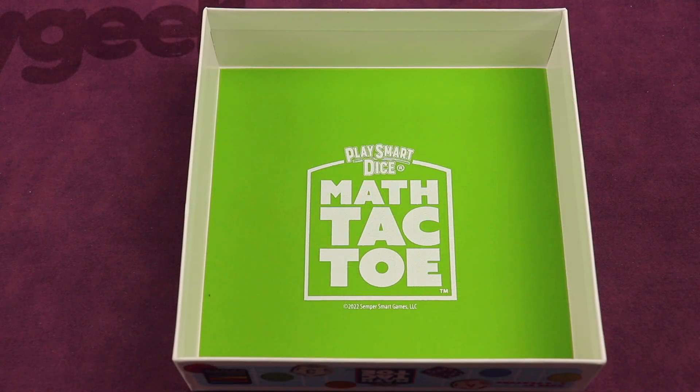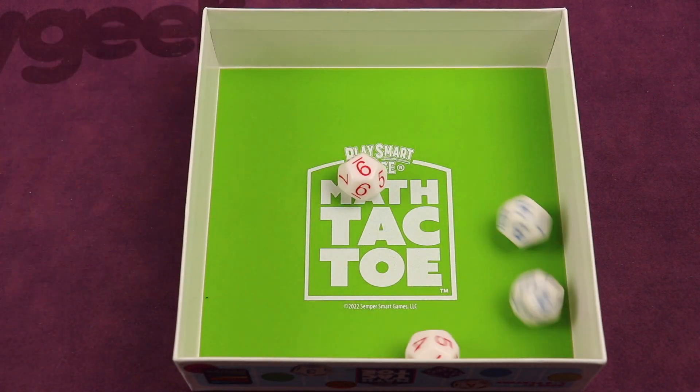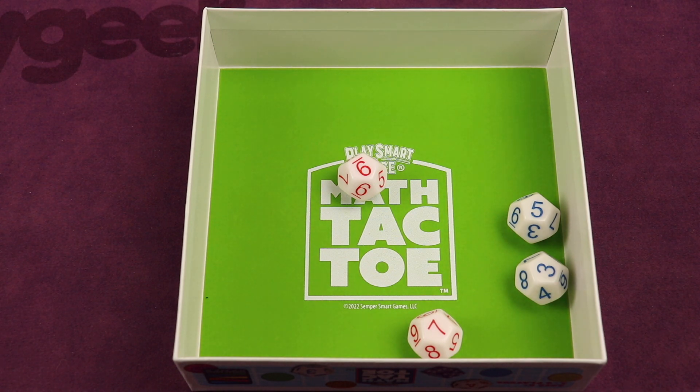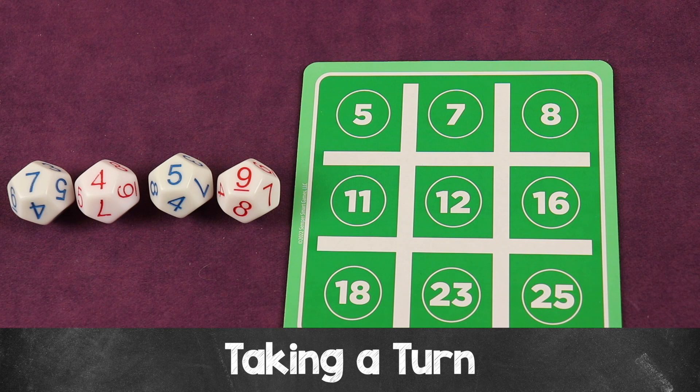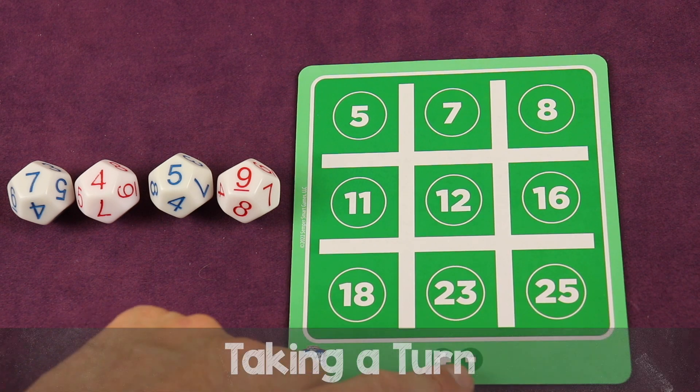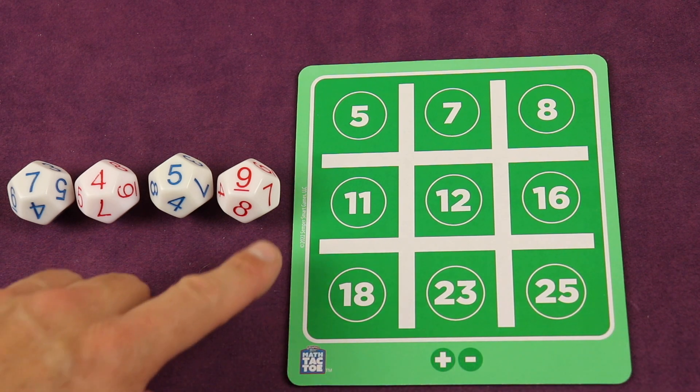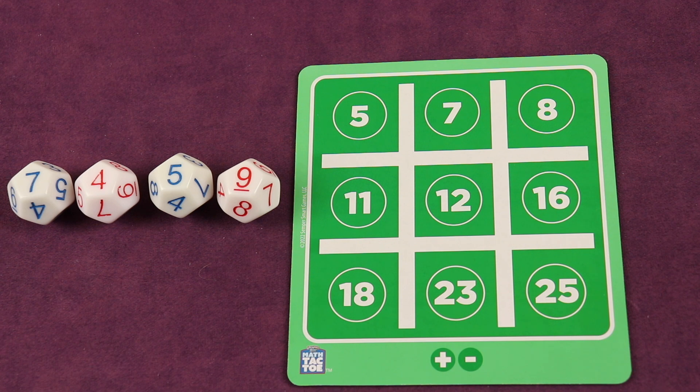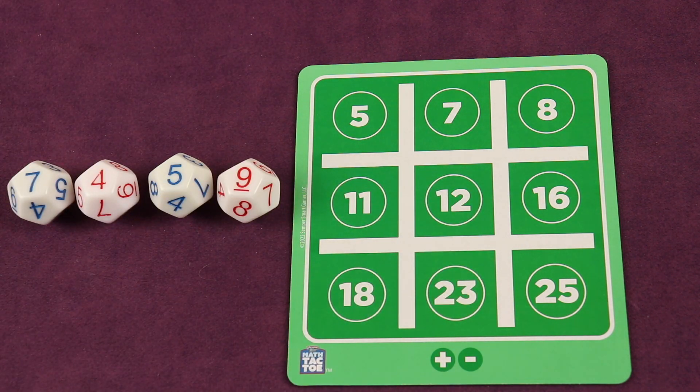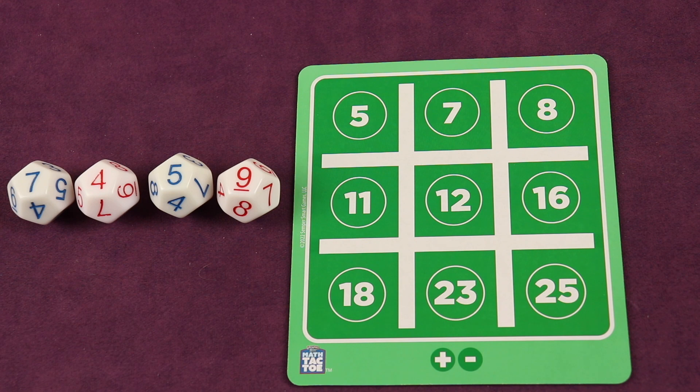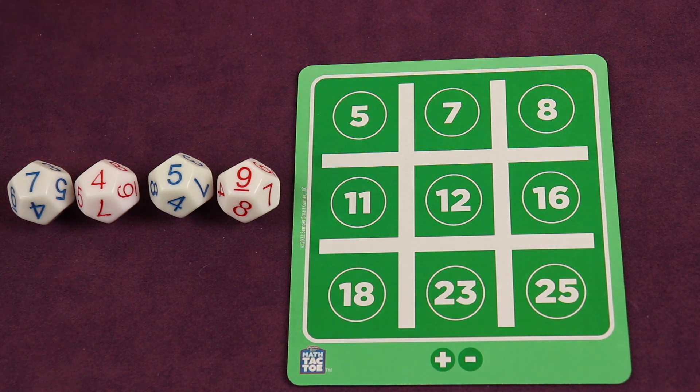The inside of the box lid doubles as a felt-lined dice rolling tray which allows you to roll the dice without them falling off the table. Based on math operations allowed by the card—in this case we're using just addition and subtraction—you must use at least two of the numbers but you can use more. Each of these dice faces can only be used once, but again you have to use at least two.